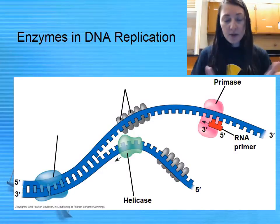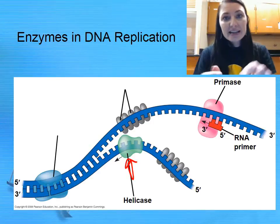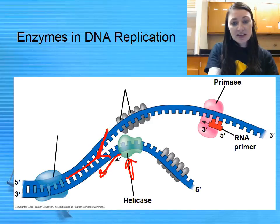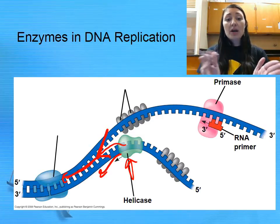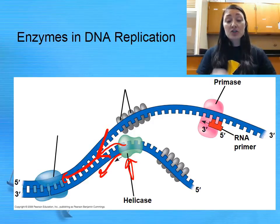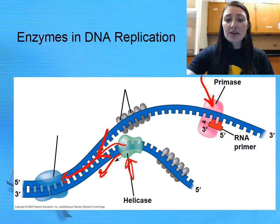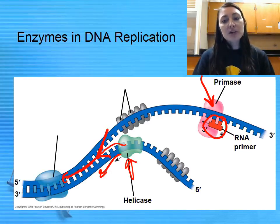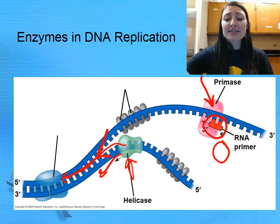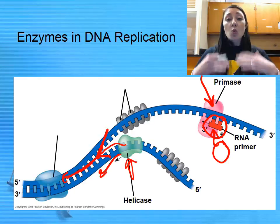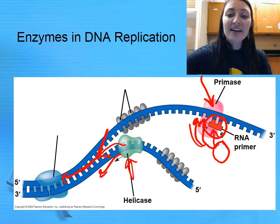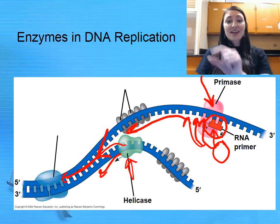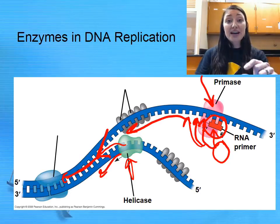Here is DNA replication happening. The helicase is ahead of everybody, moving towards the replication fork. It moves down, breaking those hydrogen bonds apart so that you get two strands separated, allowing enzymes to come in and start adding nucleotides to make a daughter strand. Primase is over here adding an RNA primer shown in red because it is RNA, not DNA. The role of the primer is to attract DNA polymerase, which looks for primers. When it sees a primer it says that's where I start adding nucleotides, and it builds a continuous chain of DNA nucleotides — that's the daughter strand.